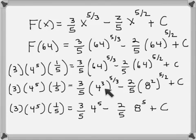The advantage is if I have a base and a power raised to another power, I multiply those powers together. 3 × 5/3 = 5. Likewise, over here I have a base and a power raised to another power, so multiply the powers: 2 × 5/2 = 5.